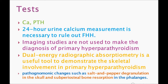For diagnostic tests, remember to check PTH first, then calcium — PTH is the first test, not calcium. A 24-hour urine calcium measurement is necessary to rule out familial hypocalciuric hypercalcemia (FHH). Imaging studies are generally not used to make the diagnosis of primary hyperparathyroidism.